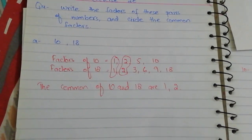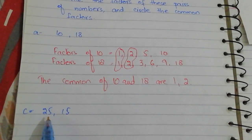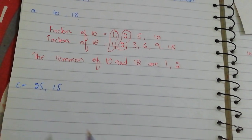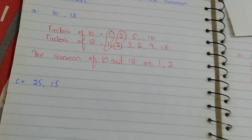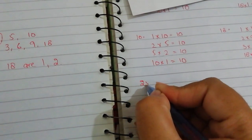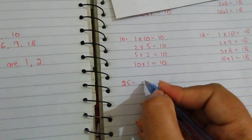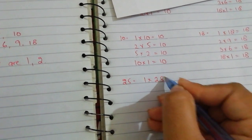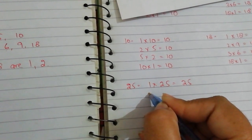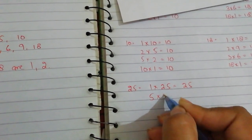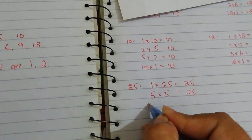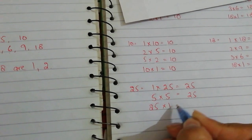Next, part C: 25 and 15. We will find the factors of these numbers. Let's take 25 first using the multiplication table: 1 multiplied by 25 is equal to 25, 5 multiplied by 5 is equal to 25, and 25 multiplied by 1 is equal to 25.